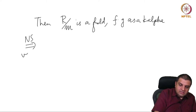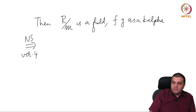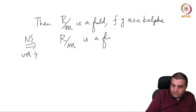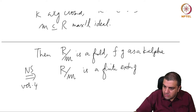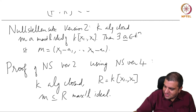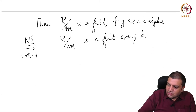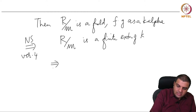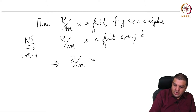Nullstellensatz version 4 implies that R mod M is a finite extension of K. But K is algebraically closed, which now means that R mod M is actually isomorphic to K.